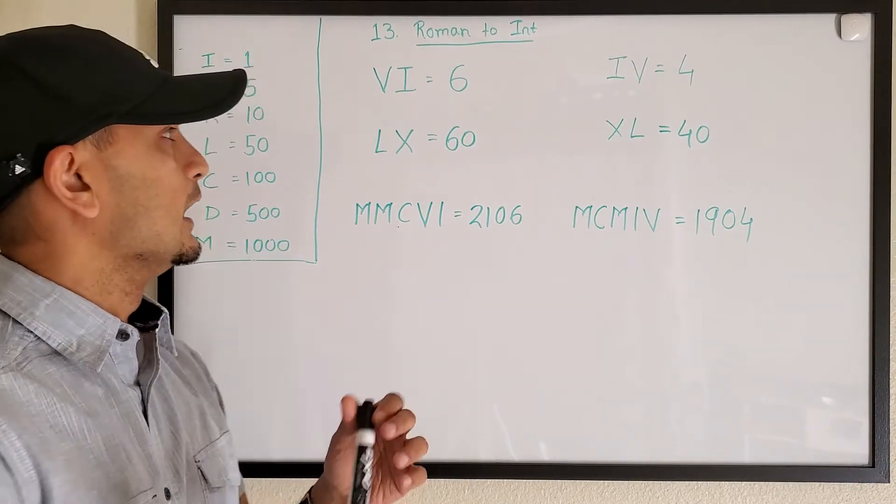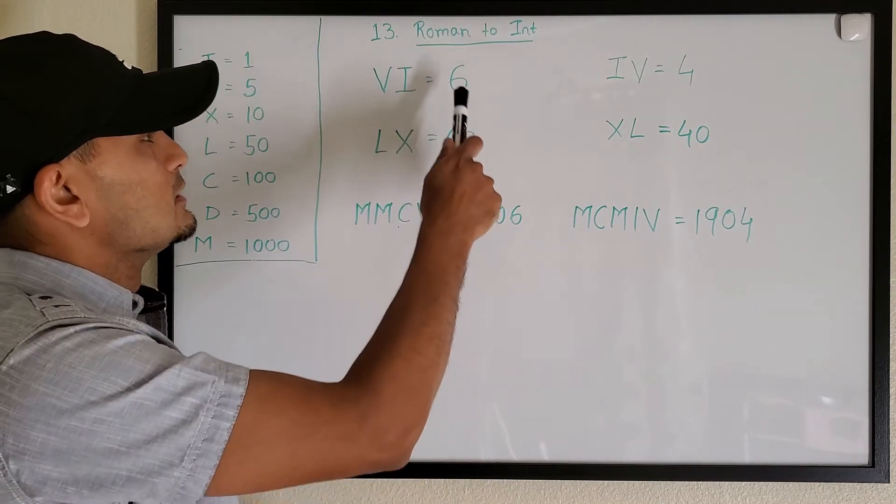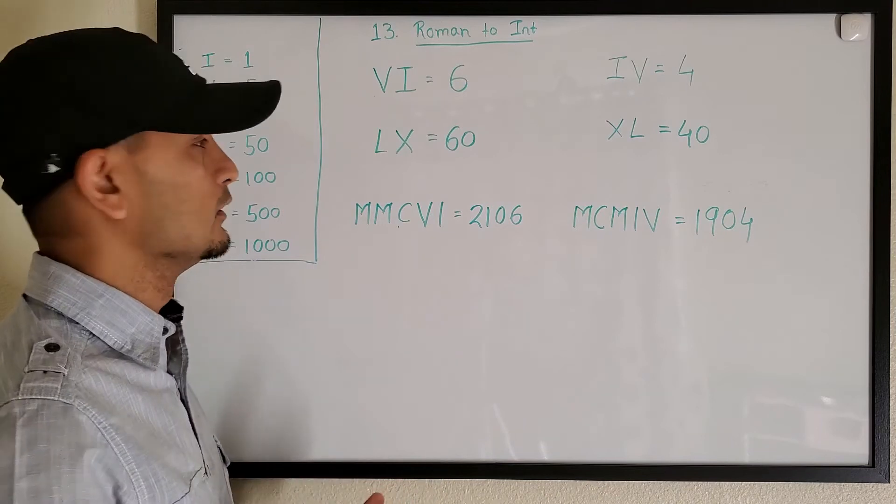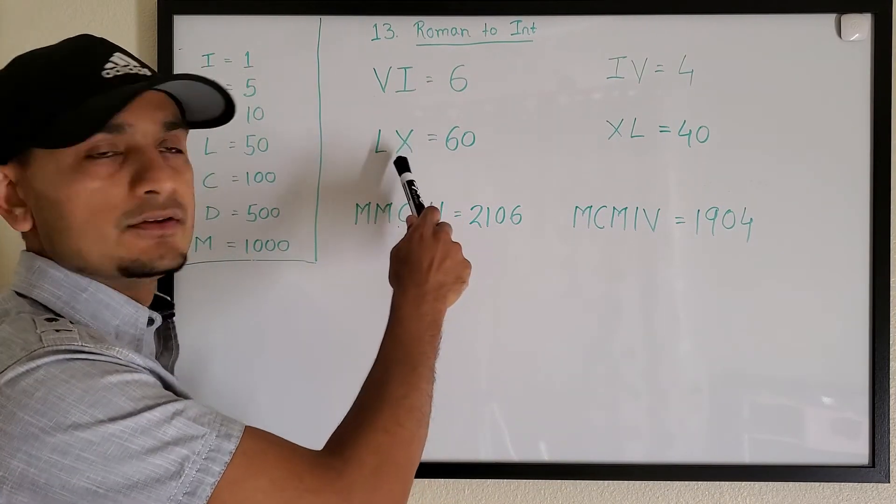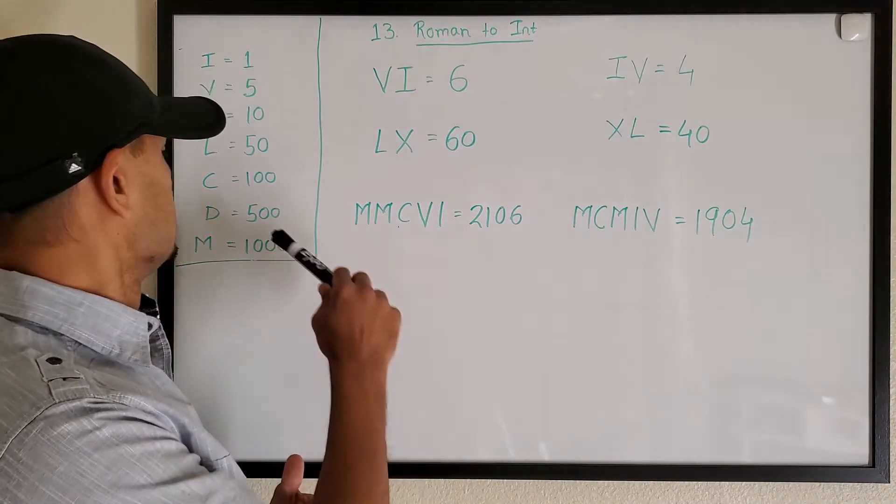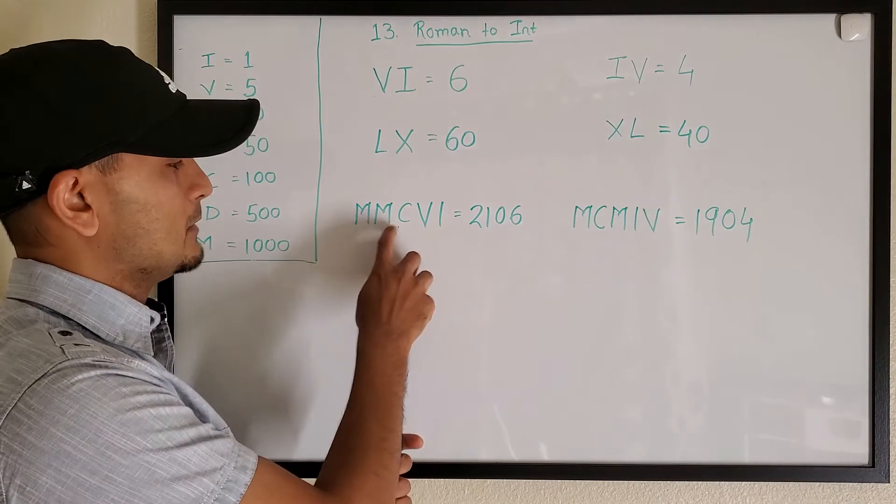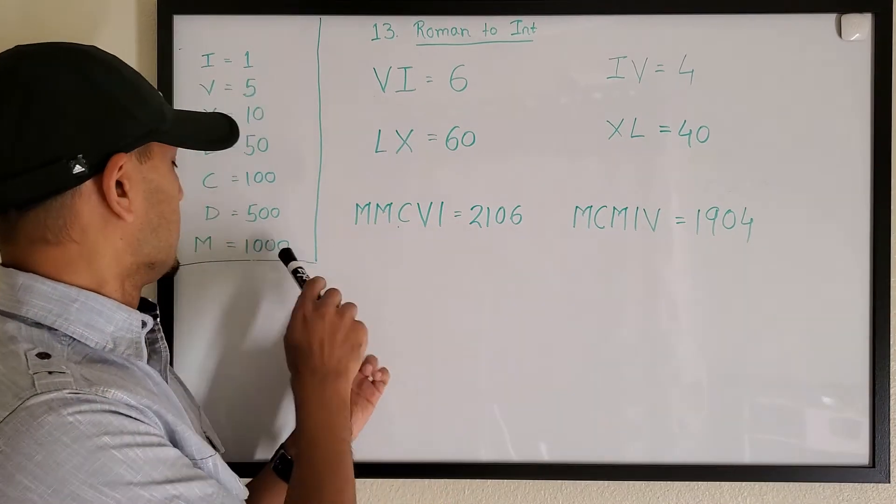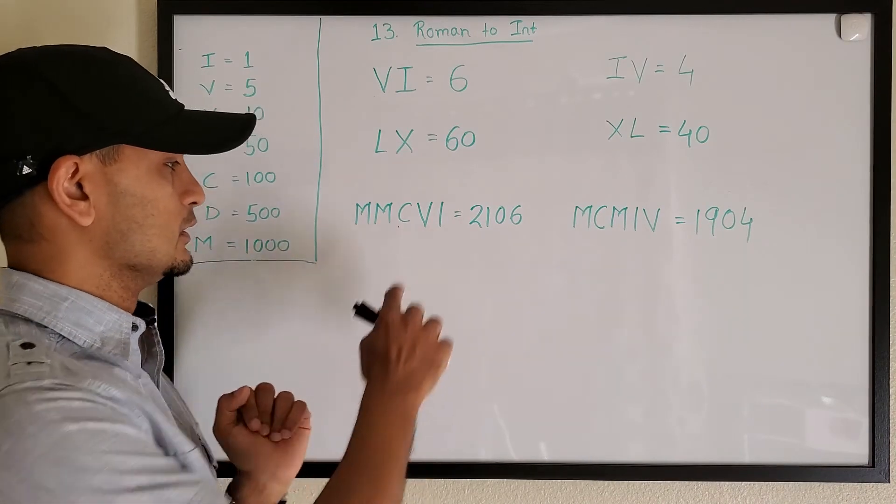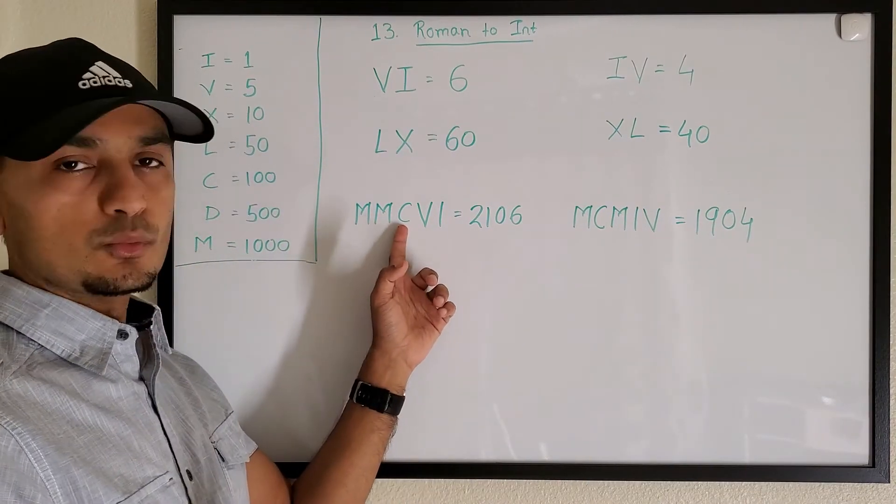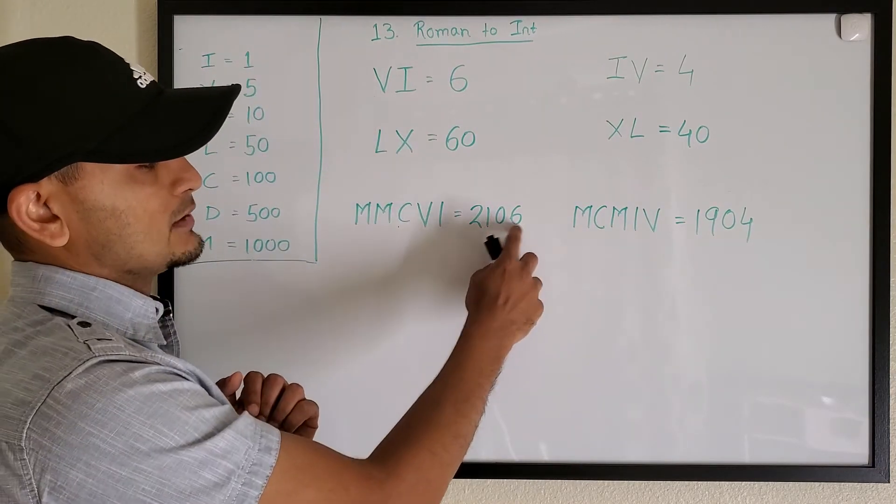As you can notice, VI which is 5 and 1 comes up to 6. LX, so L is 50 and X is 10, so LX is 60. Then a little bit more complicated number - MMCVI. So M is thousand, so thousand plus thousand is two thousand, C is 100, so 2100, and then VI which is 6, so 2106. So that's our number.